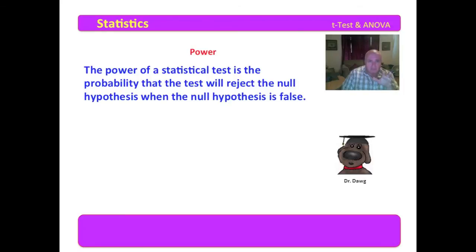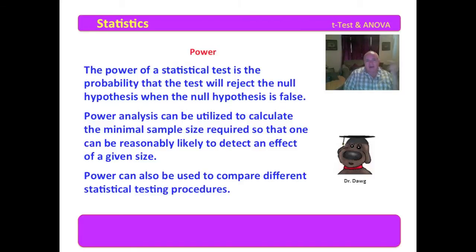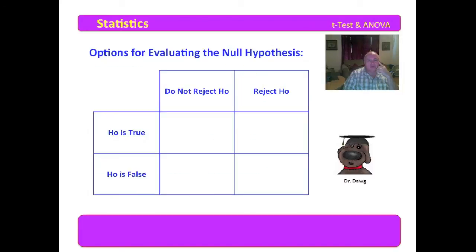Power is about the probability that the test will reject the null hypothesis when the null hypothesis is false. Power analysis can be utilized to calculate the minimal sample size required so that one can be reasonably likely to detect an effect of a given size. Power can also be used to compare different statistical testing procedures. We might compare a parametric design to a non-parametric design and find that one has more power than the other.